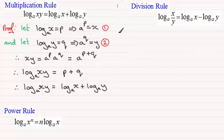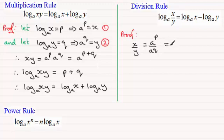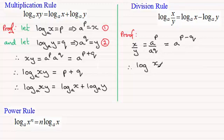Now the division rule is really much the same as what we've just done here. So for the proof of this, x divided by y must be equal to a to the power p from result one, divided by a to the power q from result two. By the rules of indices we subtract the indices, so this is the same as a to the power p minus q. If I take logs now to both sides in base a, then I've got the log of x divided by y in base a is equal to p minus q.